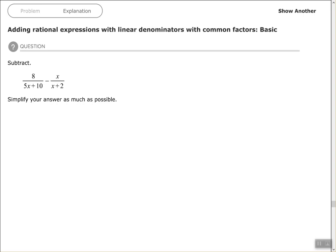I'm going to rewrite that factoring out the 5, which means I'm dividing each one of these terms by 5, giving me 5 times x plus 2. Now I'm going to find my least common multiple of my denominators.